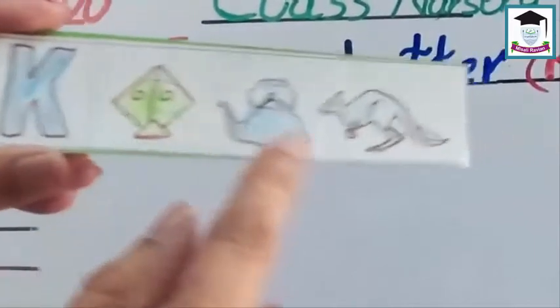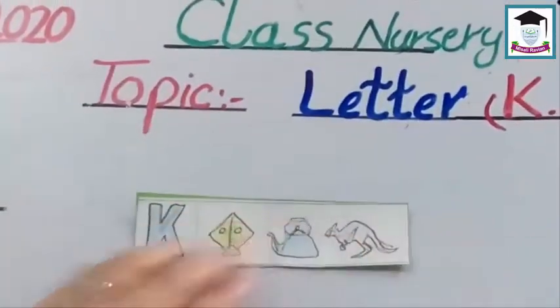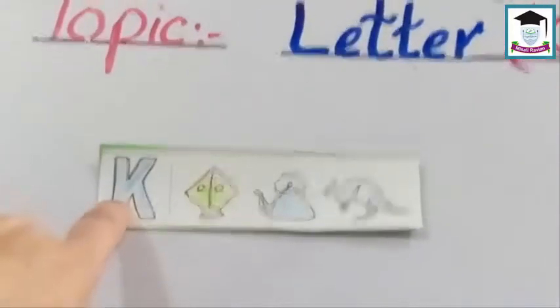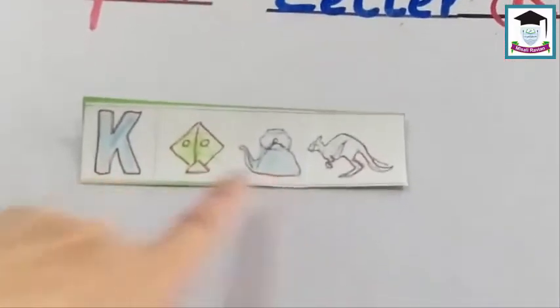K has many friends like this. K sound is 'k'. K for kite, K for cattle, K for kangaroo.